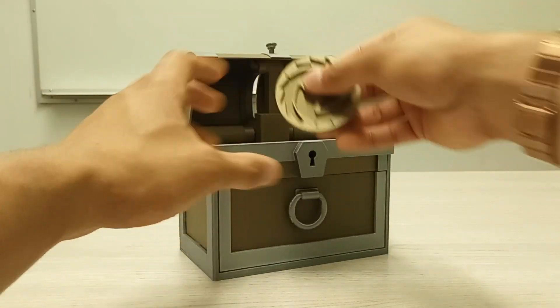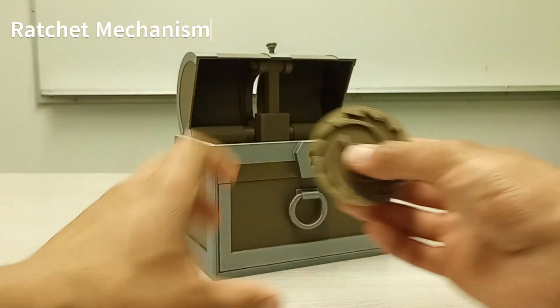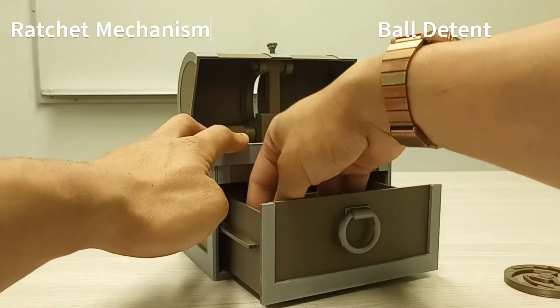Today we're going to be talking about two mechanisms. The first one being this ratchet mechanism and the second one being this ball detent mechanism.